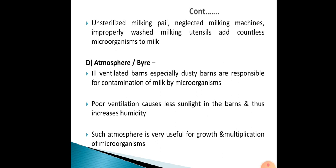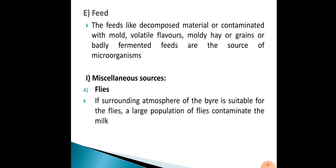The atmosphere of the barn is another contamination source. Ill-ventilated and especially dusty barns are responsible for contamination of milk by microorganisms. Poor ventilation causes less sunlight and increases humidity, creating conditions very suitable for the growth and multiplication of microorganisms. The feed is also a source — decomposed material, feeds contaminated with mould, volatile flavours, mouldy hay or grains, or badly fermented feeds are sources of microorganisms.